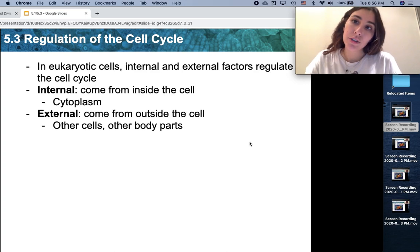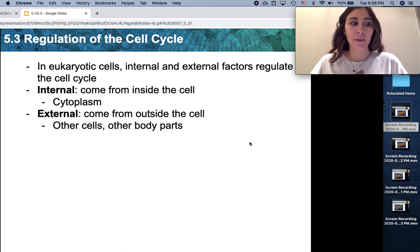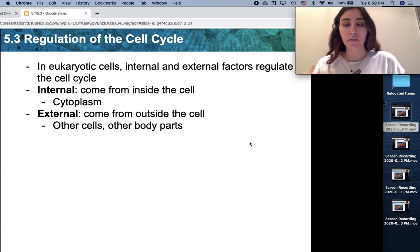In eukaryotic cells, both internal and external factors regulate the cell cycle. This means that our cells are constantly receiving signals from either inside internally or outside externally. Some of these signals tell the cell to divide, or they might tell the cell to not divide or to stop dividing, depending on what kind of signal the cell is receiving.